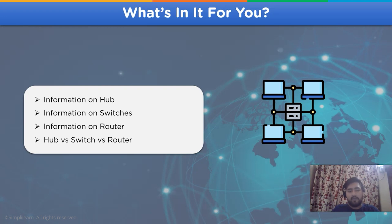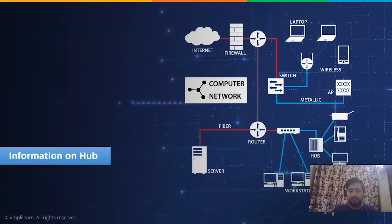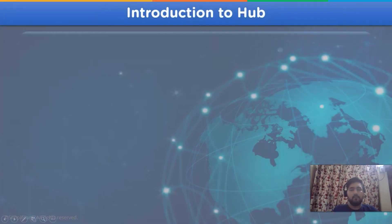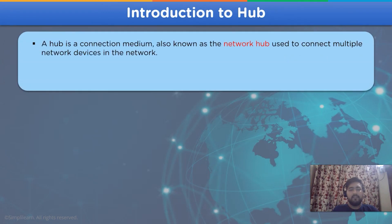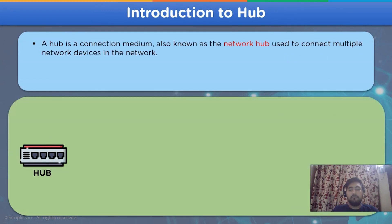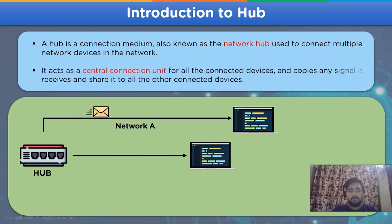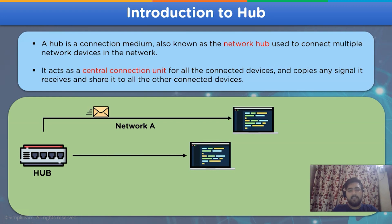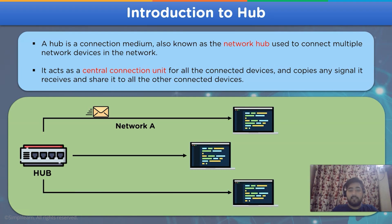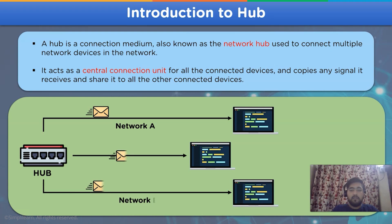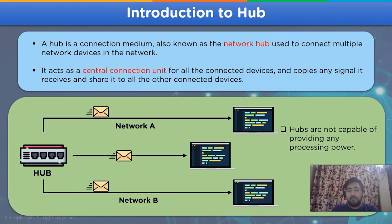Let's begin with the introduction to the network hub. A network hub is a device designed to connect multiple network units in a closely connected network channel. Hubs are also used in LAN networks. The network hub shares data with the destination device by acting as a central connection point of data transmission, connecting all the other devices in the channel.